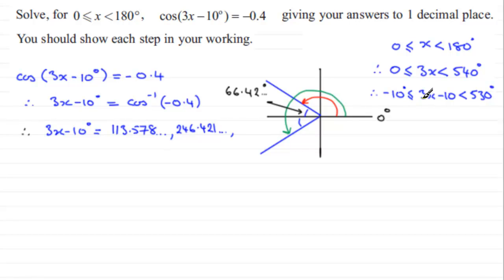Now remember, the range for 3x - 10 degrees is up to 530 degrees, and I can see that if I go round to here, this red angle, and then do another turn of 360 degrees, in other words add 360 degrees to this, I still fall within this range because the angle that I get by adding 360 to this is 473.578 and so on.